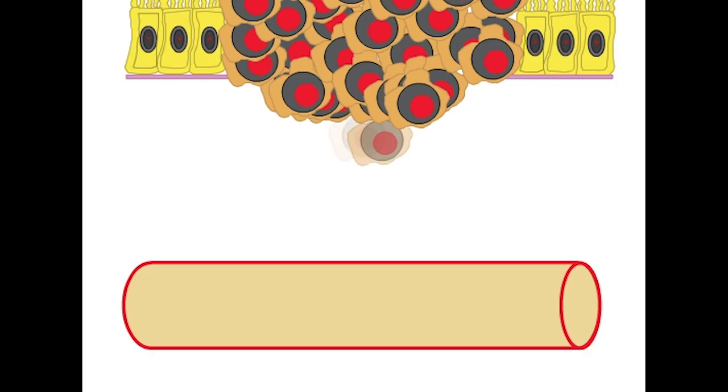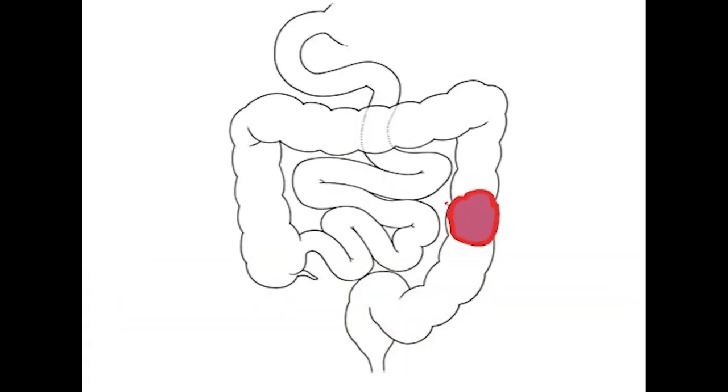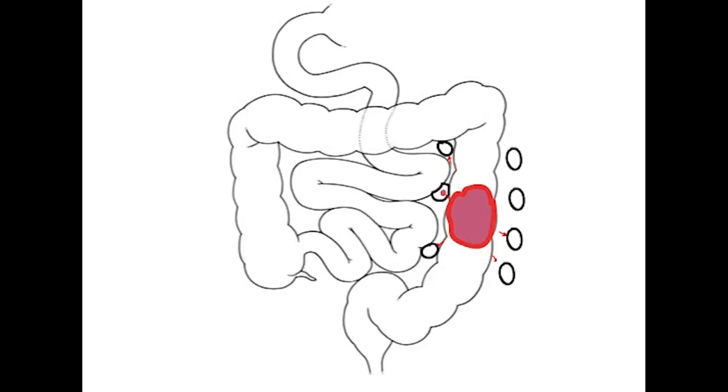As the cancer enlarges, it will break through the underlying basement membrane. As the cancer invades underlying tissues, it infiltrates blood and lymphatic vessels, providing potential for widespread dissemination.